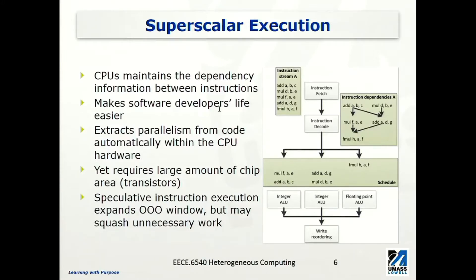Let's look at this example. We have instruction stream A with five instructions. We have 'add A, B, C' — assuming the first operand is the destination, so we are adding values from B and C and putting the result into A, assuming these are all in registers. The second instruction is 'D, B, E'. If we look at the first two instructions, there are no dependencies between them because B, C, and E are all source operands. The processor reads values from them; the destination operands are A and D respectively. So there's no conflict — no dependency.